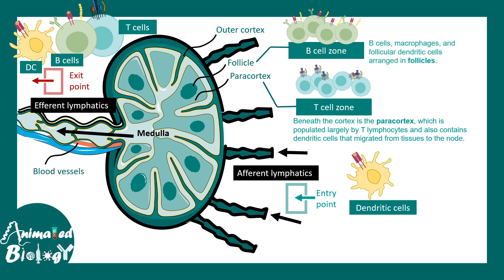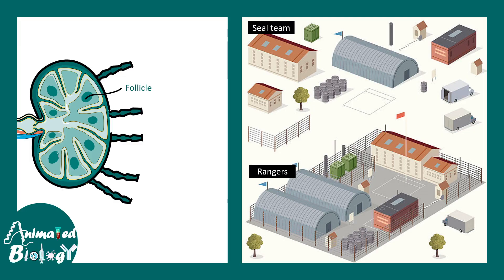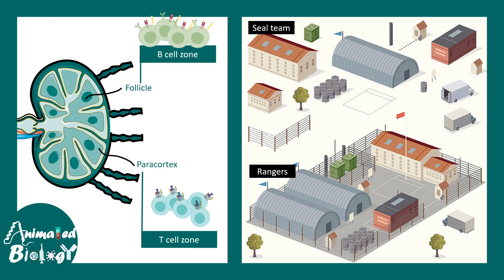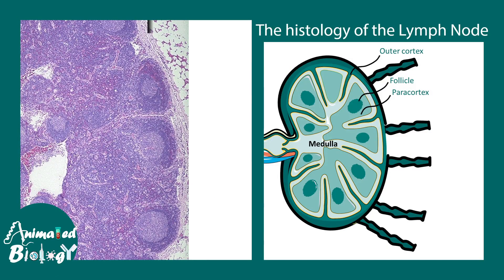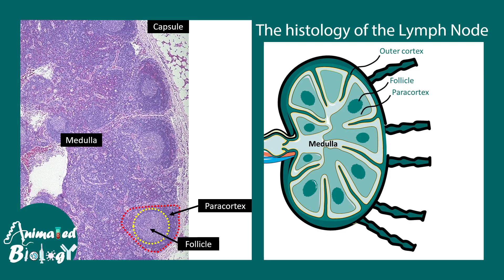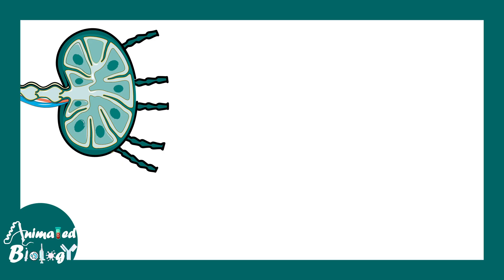There are interactions between dendritic cells, T cells, and B cells happening all the time. You can imagine this like an army barracks — there are dedicated regions for specific units, just like there are specific regions for T cells and specific regions for B cells. On a histological slide you can see this is how the follicle looks, with the paracortex — where the T cells reside — on the outside. The B cell zone encompasses the overall germinal center and lymphatic follicle.